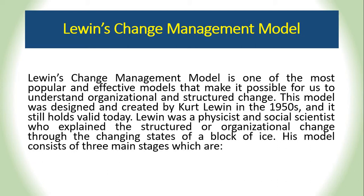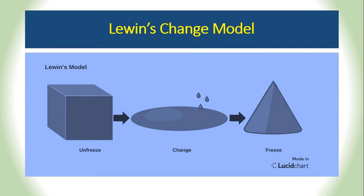The model was designed by Kurt Lewin in the 1950s and it is still a valid model that businesses can implement for bringing organizational and structural change. The model is comprised of three stages: the unfreeze stage, the change stage, and the freeze stage. This model especially helps organizations whenever they want to introduce a planned change. A planned change is considered a developmental change implemented by organizations with the purpose of improving their operations and performances.